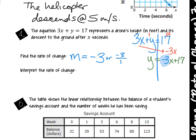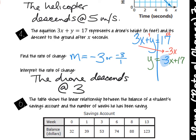We still need to interpret this. The equation represents a drone's height as it's descending to the ground. How would we interpret m equals negative 3 for this drone? The drone descends 3 feet per second. We had to move the 3x over before identifying slope — if we hadn't solved for y first, we would have answered the wrong number. It has to be solved for y first; that's why we do that skill.